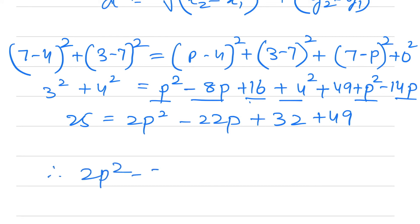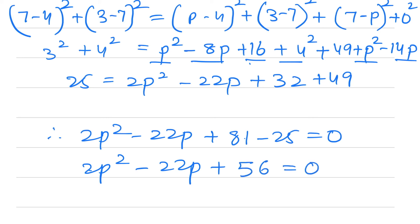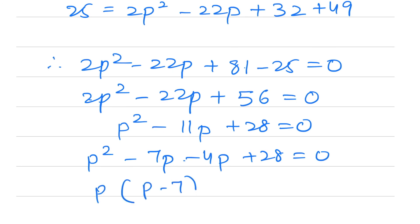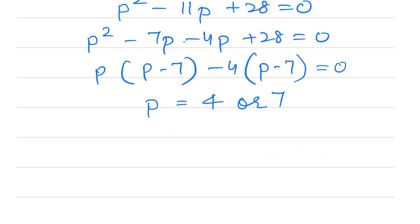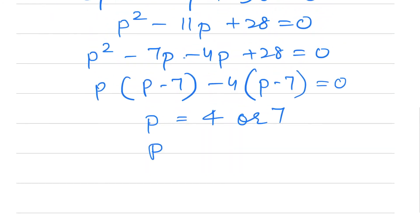Setting up: 25 = 2p² − 22p + 81. Rearranging: 2p² − 22p + 56 = 0, so p² − 11p + 28 = 0. Factoring: (p−7)(p−4) = 0, giving p = 7 or p = 4. We cannot take p = 7 as then BC = 0. Therefore p = 4.